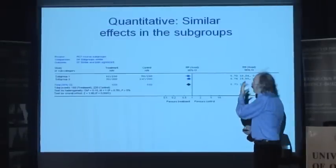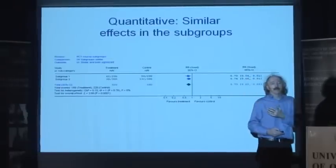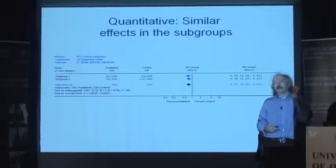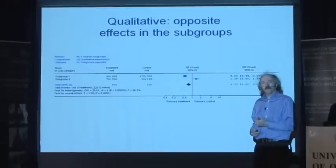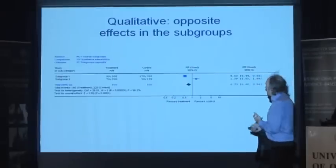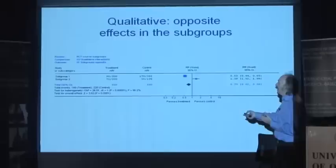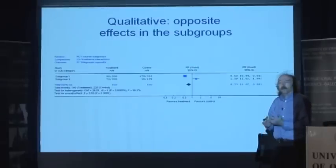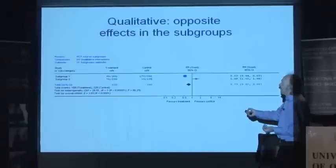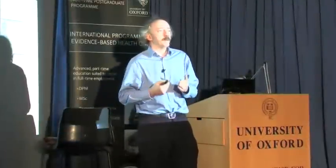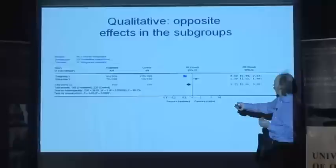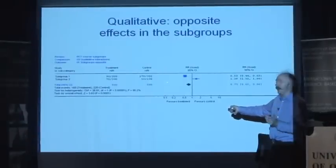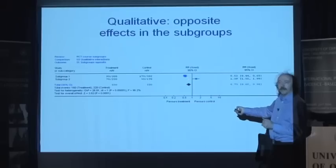The most straightforward case is a quantitative interaction: there's a benefit in both groups, statistically significant in both groups, consistent with the overall results — that's an easy one. A qualitative interaction is where overall there seems to be a benefit, but actually one subgroup is benefiting greatly — much better than the average — and the other subgroup has gone on to the harm side. When we see a result like that, we should not just be asking why it's so wonderful for that group; we really should be thinking about the rationale for why the other has gone harmful, because maybe they just separated by chance.